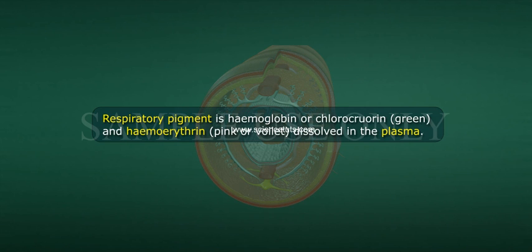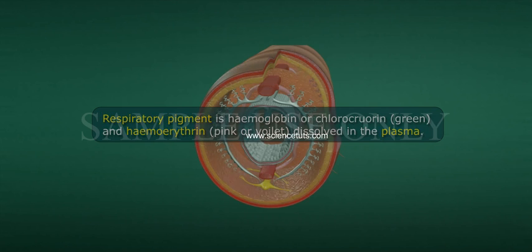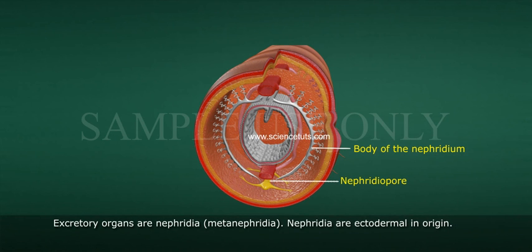Respiratory pigments include hemoglobin, chlorocruorin (green), and haemerythrin (pink or violet), all dissolved in the plasma. Excretory organs are nephridia or metanephridia, which are ectodermal in origin.